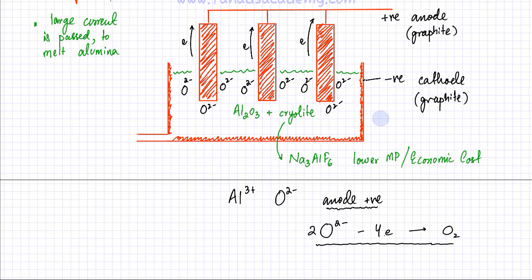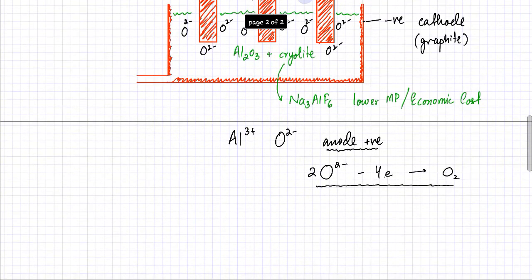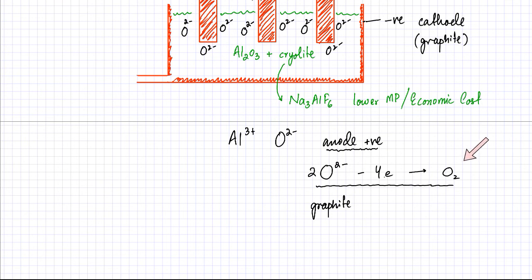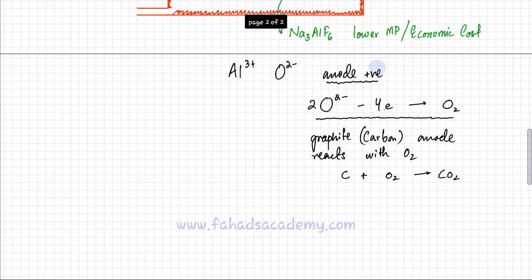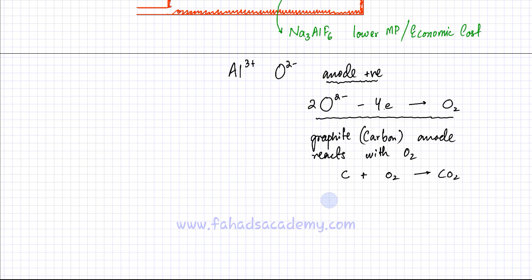The reaction at the anode doesn't stop there. The graphite anode reacts with the oxygen gas produced — carbon (graphite) reacts with oxygen, forming CO2 gas through combustion. As a result, the anodes frequently burn away and need to be replaced frequently, which adds to the cost of the extraction process.